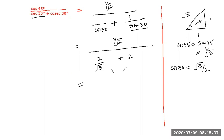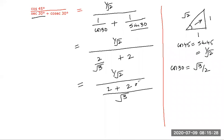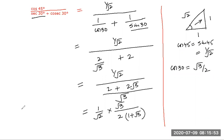So the expression becomes 1/√2 divided by (2/√3 plus 2). That simplifies to 1/√2 times √3 divided by 2(1 + √3). The final answer is √3 divided by 2√2(1 + √3).